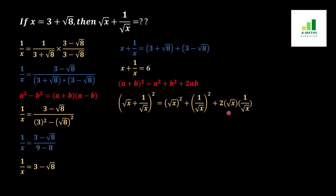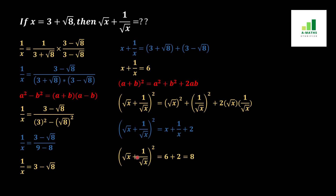Simplifying, under root x squared gives x, and 1 over under root x squared gives 1 over x. Under root x multiplied by 1 over under root x cancels the roots and gives 1, so the 2ab term becomes 2. Therefore, (under root x plus 1 over under root x) squared equals x plus 1 over x plus 2. We insert the value x plus 1 over x equals 6, giving us 6 plus 2.